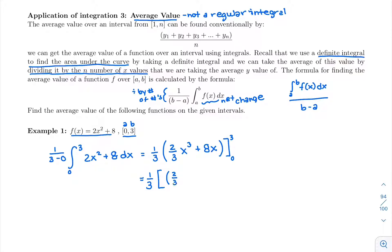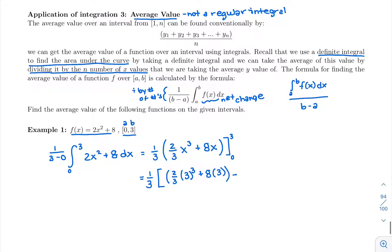I'll grab my calculator and do two thirds of 3³ plus 8 times 3. There's my whole upper bound minus, I'm going to plug in my whole lower bound, two thirds of 0³ plus 8 times 0.